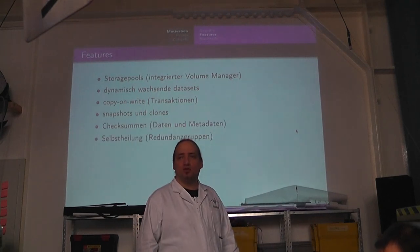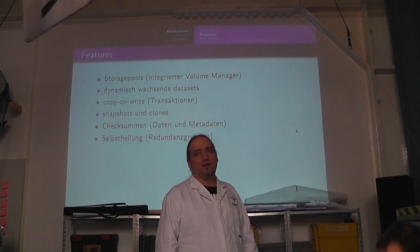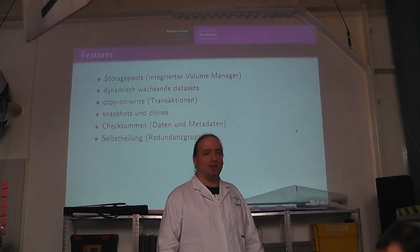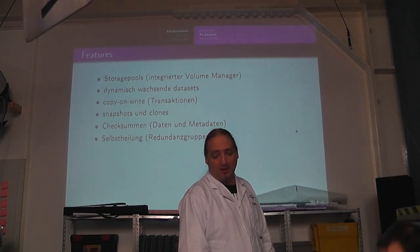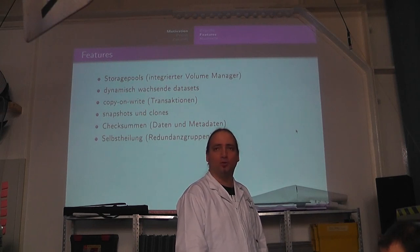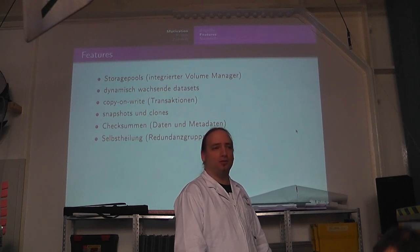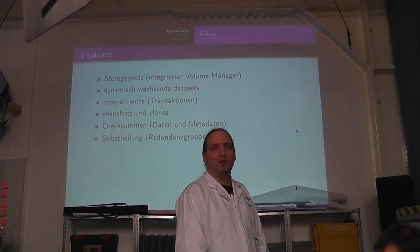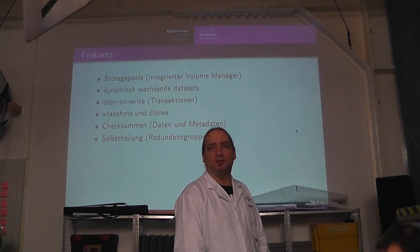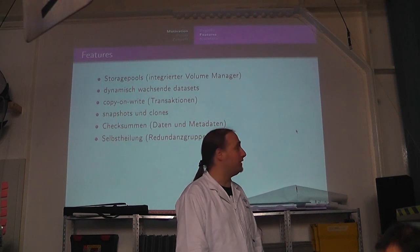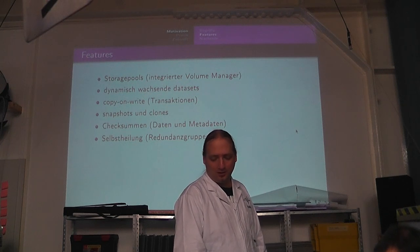Das gesamte Dateisystem ist Checksummen-gesichert, sowohl die Daten als auch die Metadaten. Das heißt, die Daten kriegen eine Checksumme, dann die Werte in die Metadaten geschrieben, dann kriegt die Metadaten eine Checksumme und das bildet dann so einen Baum. Damit kann man quasi das komplette Dateisystem Checksummen-geprüft halten. Und das sorgt dafür, dass wenn irgendwo BitRot eintritt oder irgendwo ein Bit kippt, dann stellt das System das halt fest. Und das bedeutet auch, wenn ich versuche, Daten zu lesen, wo es gekippt ist, dann versucht er es automatisch zu heilen, ohne dass ich was dazu machen muss. Und bei Redundanzgruppen ist das natürlich einfach – dann nimmt er die Daten einfach von der redundanten Quelle.